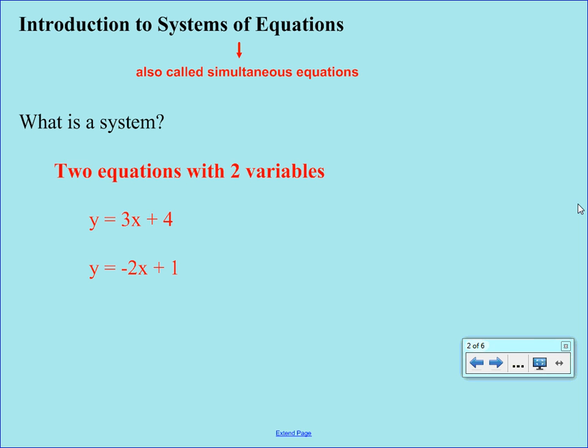And you may recognize these equations as equations for lines. The first line would have a slope of 3 and a y intercept of 4, whereas the second line would have a slope of negative 2 and a y intercept of 1. Together, these two equations make what we call a system. We've worked on solving equations and just finished up solving inequalities.